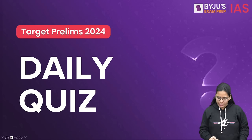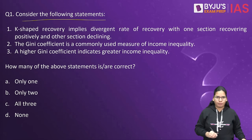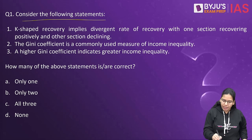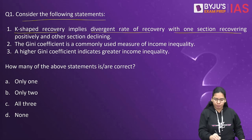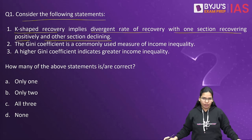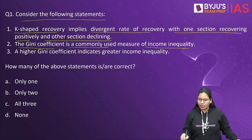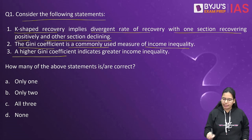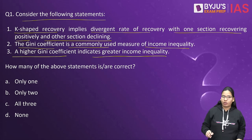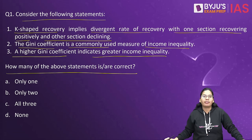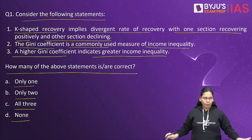Let's start our session for today — daily quiz. Here is your first question on your screen. Consider the following statements. We have three statements. First: K-shaped recovery implies divergent rate of recovery with one section recovering positively and the other declining. Second: the Gini coefficient is a commonly used measure of income inequality. Third: a higher Gini coefficient indicates greater income inequality. How many of the above statements are correct — only one, only two, all three, or none?